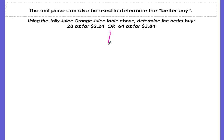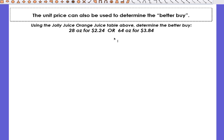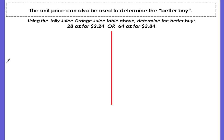So I'm going to kind of divide my paper in half here, and I want to find the unit price for each of our options. So the first one is $2.24 for 28 ounces. I want to know how much for 1 ounce. So I'm going to have to divide. $2.24 divided by 28.